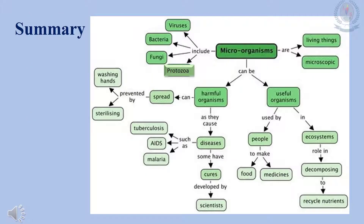Summary of the lesson: Microorganisms include viruses, bacteria, fungi and protozoa. Microorganisms are living things and microscopic. They can be divided into harmful organisms and useful organisms. Harmful organisms can spread diseases such as tuberculosis, AIDS and malaria. This spread is prevented by washing hands and sterilizing. Scientists have developed cures to these diseases. Useful organisms are used by people to make food and medicines. Useful organisms also play a role in ecosystems by decomposing matter and recycling nutrients.